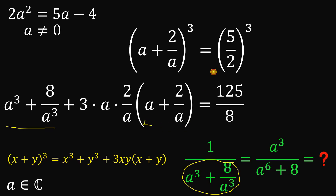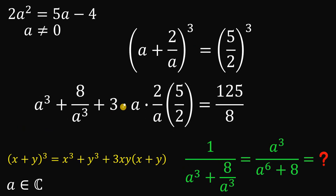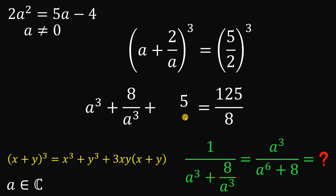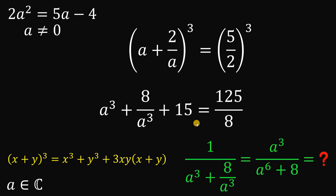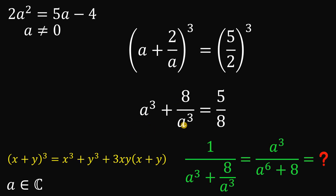We know a + 2/a = 5/2, and 3 times a times 2/a simplifies to 6. So 6 times 5/2 is 15. Subtracting 15 from both sides: 125/8 - 15 = 5/8. Therefore, a³ + 8/a³ = 5/8.